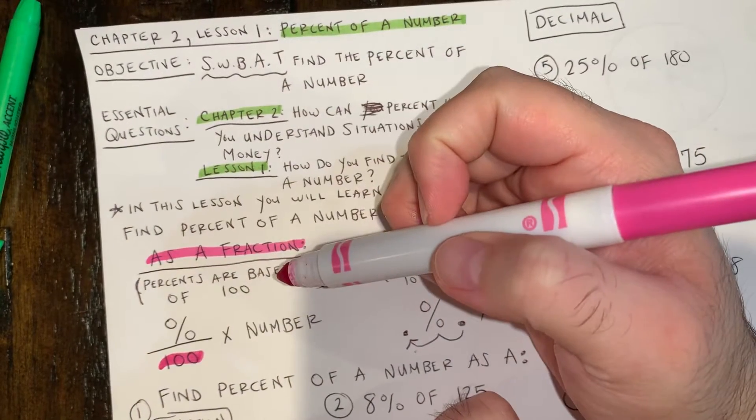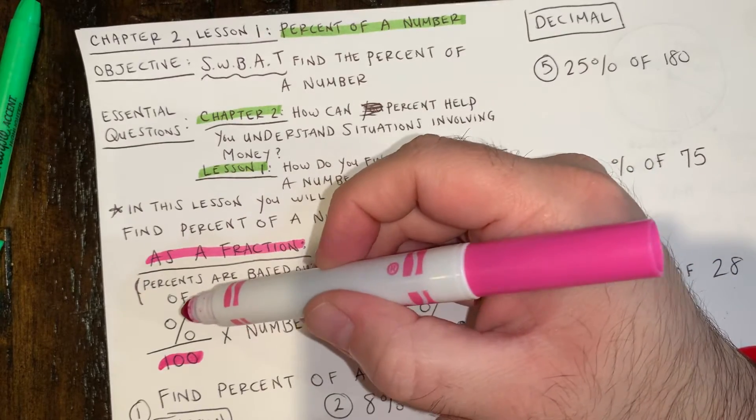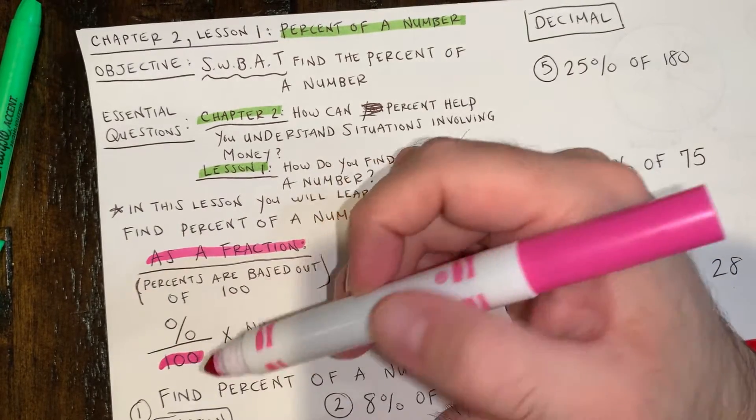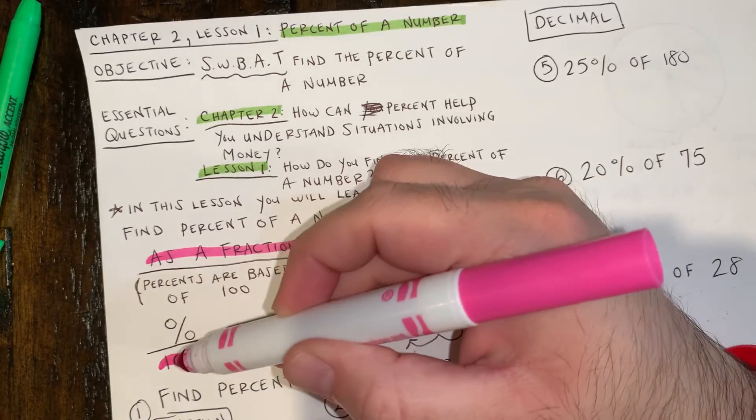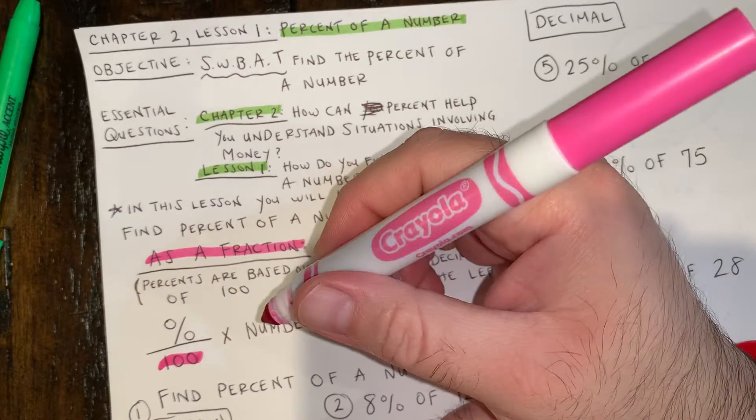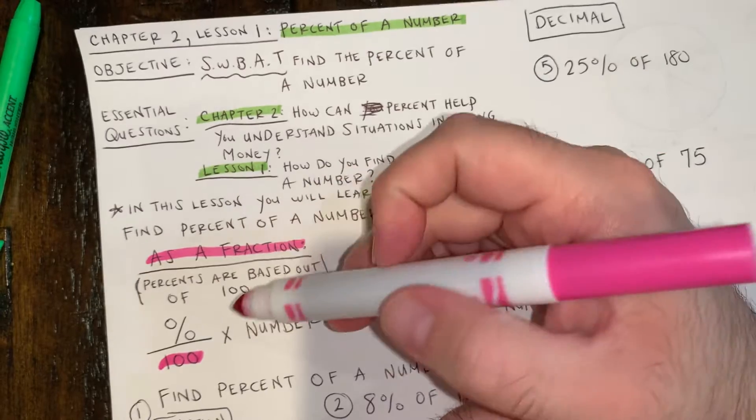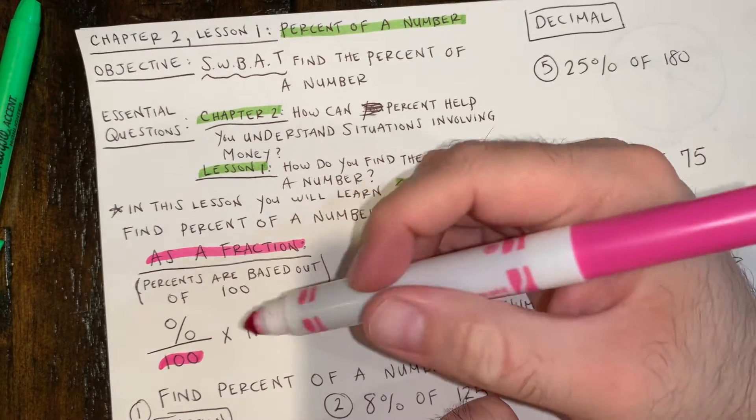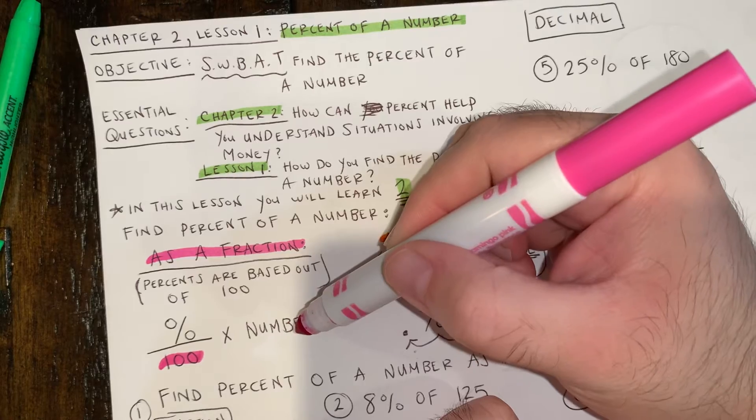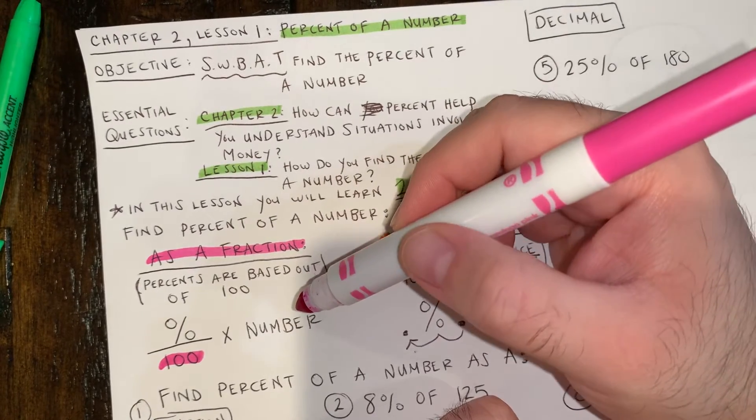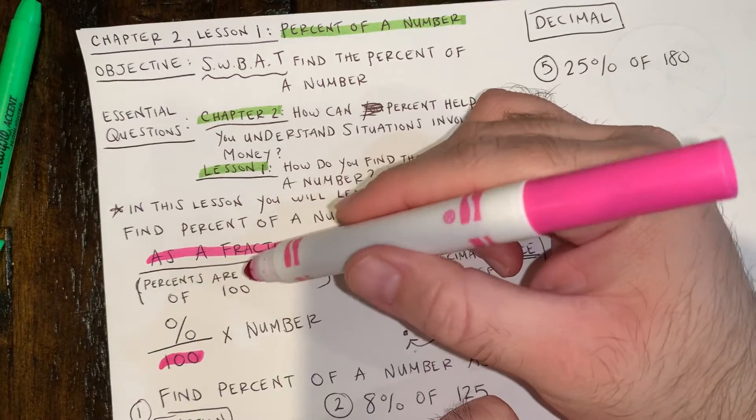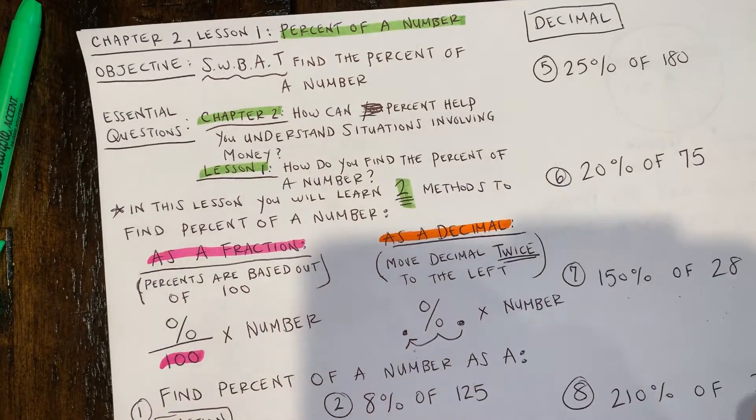So if they give you 50 percent, you're going to put 50 on top over 100. If they give you 75 percent, you're going to put the 75 over 100. If they give you 31.2 percent, you're going to put 31.2 over 100. And then all you have to do is multiply it by whatever the other number is. So it's a pretty easy process, and we'll be doing some examples of percent as a fraction for the next part of the video.